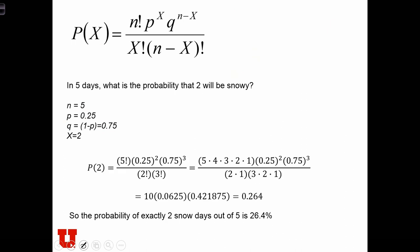What about if we wanted to know the probability that 2 out of the next 5 days will be snow days? Remember from before that the probability of snow on any day is 25%.